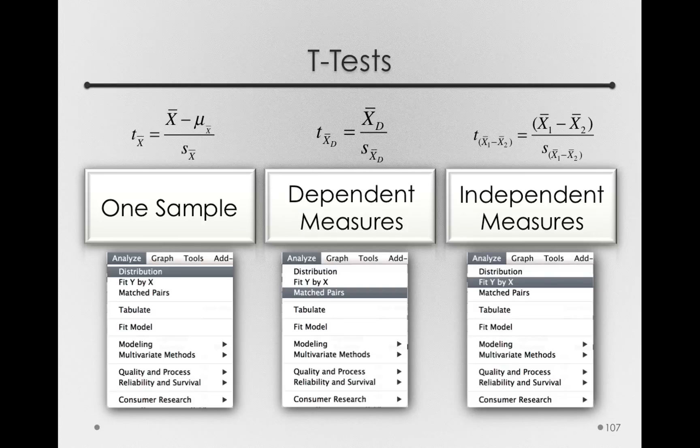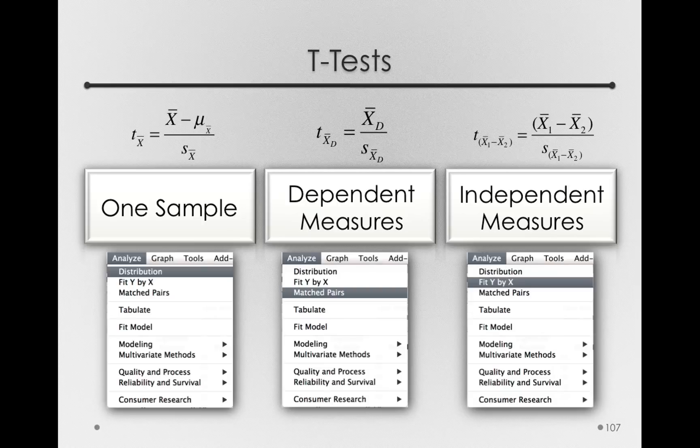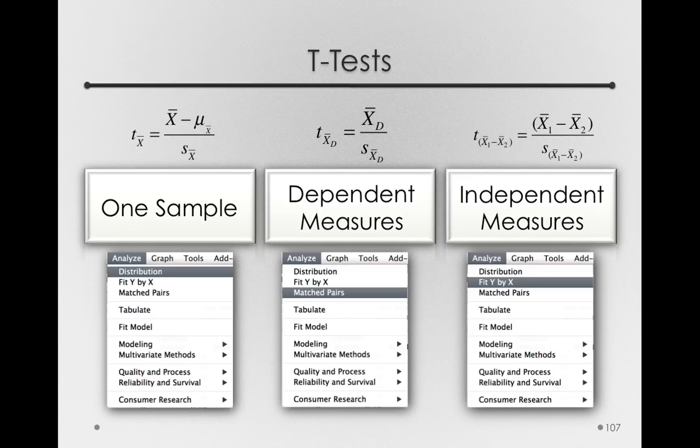You may have noticed for the Dependent Measures T-Test and Independent Measures T-Test, we used a very similar experimental situation, the effect of a blood pressure drug. For the Dependent Measures T-Test, we had a situation where we measured the same people multiple times.